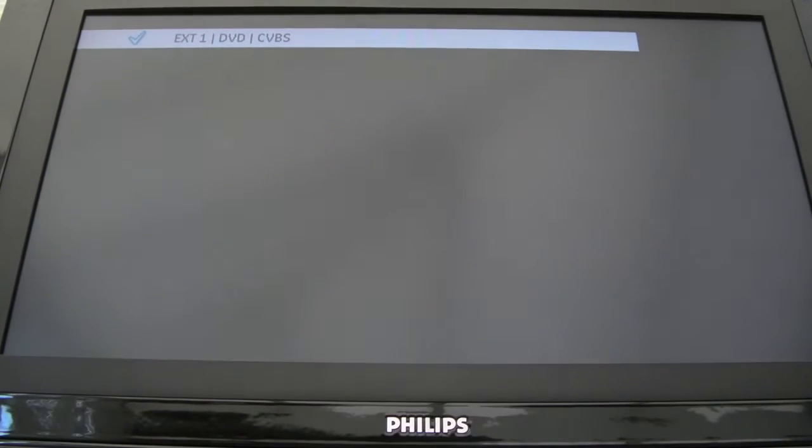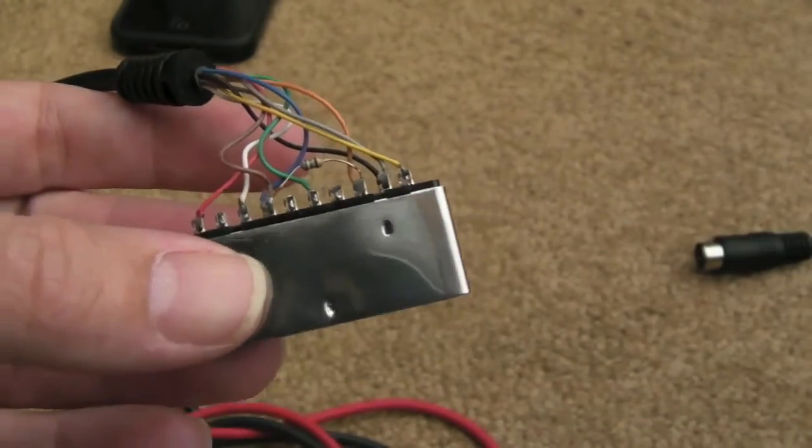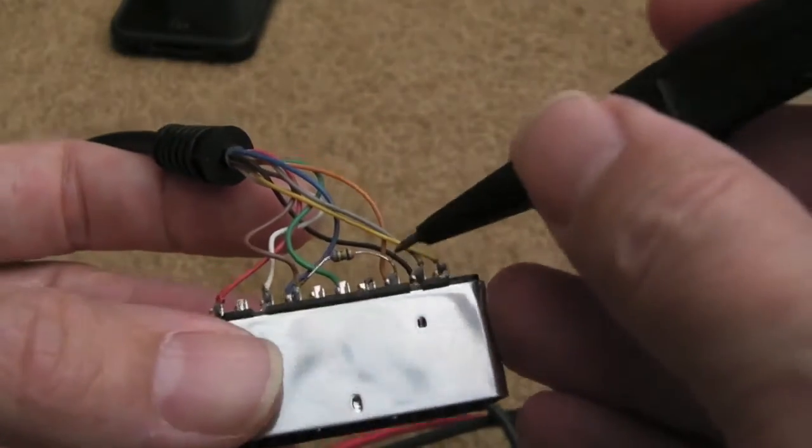I'll just show you now on the TV. Right, so the lead's connected, the Saturn is now switched on. CVBS—that's composite. Well, it's looking wired all right if I'm completely honest.